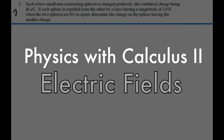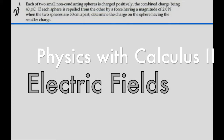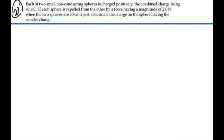Here's problem 23.1. Each of two small non-conducting spheres is charged positively, the combined charge being 40 microcoulombs. If each sphere is repelled from the other by a force having a magnitude of 2 newtons when the two spheres are 50 centimeters apart, determine the charge on the sphere having the smaller charge.